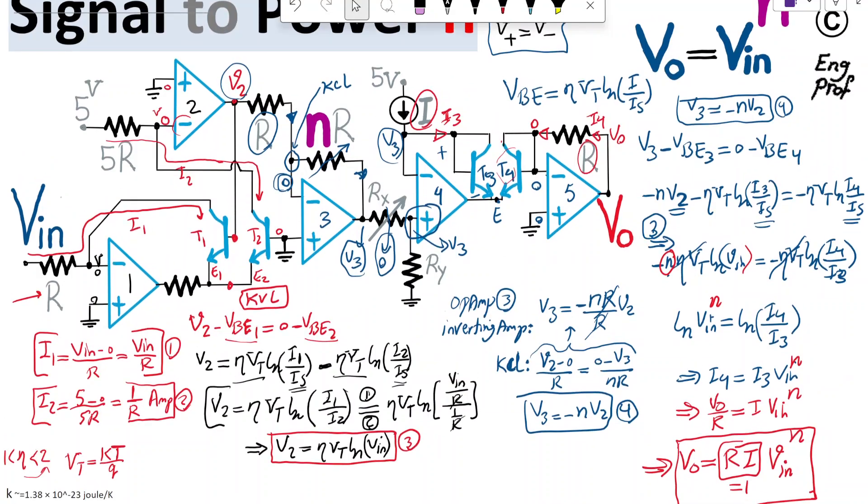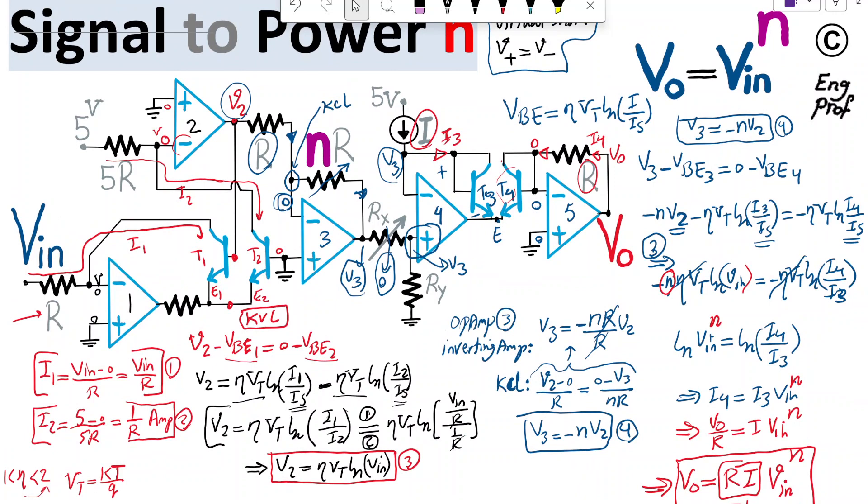So, it just shows that, though this circuit has limitation, especially the fact that we have to properly adjust the value of potentiometer Rx and make sure that the VIN is a small signal enough so that V3 can be applied directly to positive input terminal of op-amp number 4, but it shows a process in which the input voltage VIN can be raised to an arbitrary power N that is adjustable by the value of potentiometer Nr in this circuit. I hope that this is helpful.